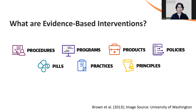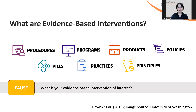Evidence-based interventions can take on forms such as any of these seven presented here, and have already been tested to show that they work through effectiveness research. Once we know these things work, the goal of implementation research is to study how to help people or organizations do these things. Take a moment and think about your own area of work — what is the evidence-based intervention that you're interested in getting adopted and implemented?